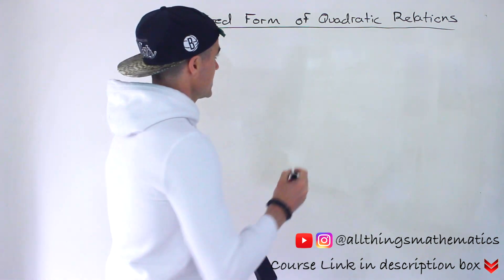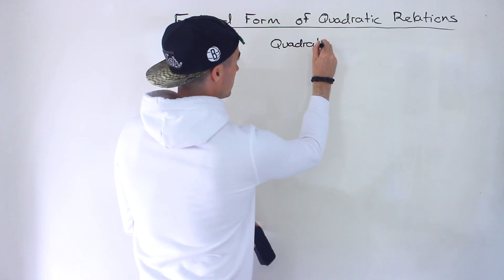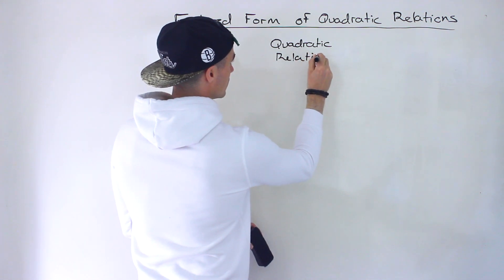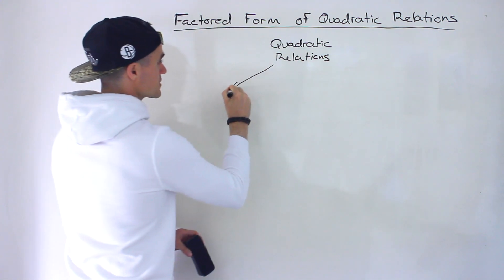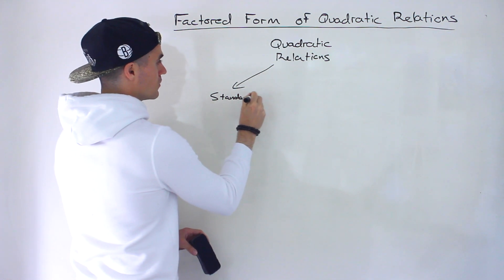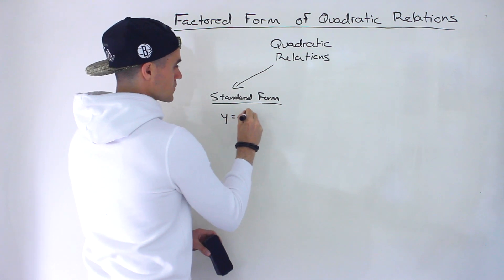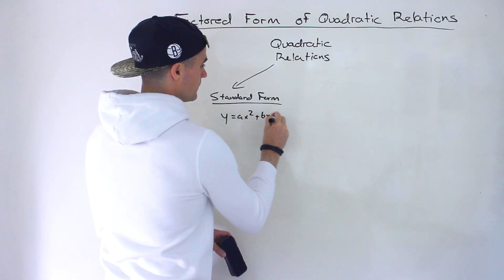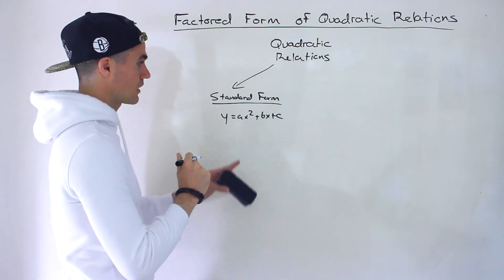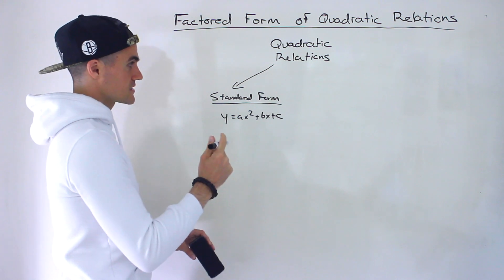So just as a quick review with quadratic relations, what different forms have we gone through so far? Well, we started with the standard form, which was just y equals ax squared plus bx plus c. We went over a bunch of questions dealing with that — different kinds of algebraic questions and word problems.